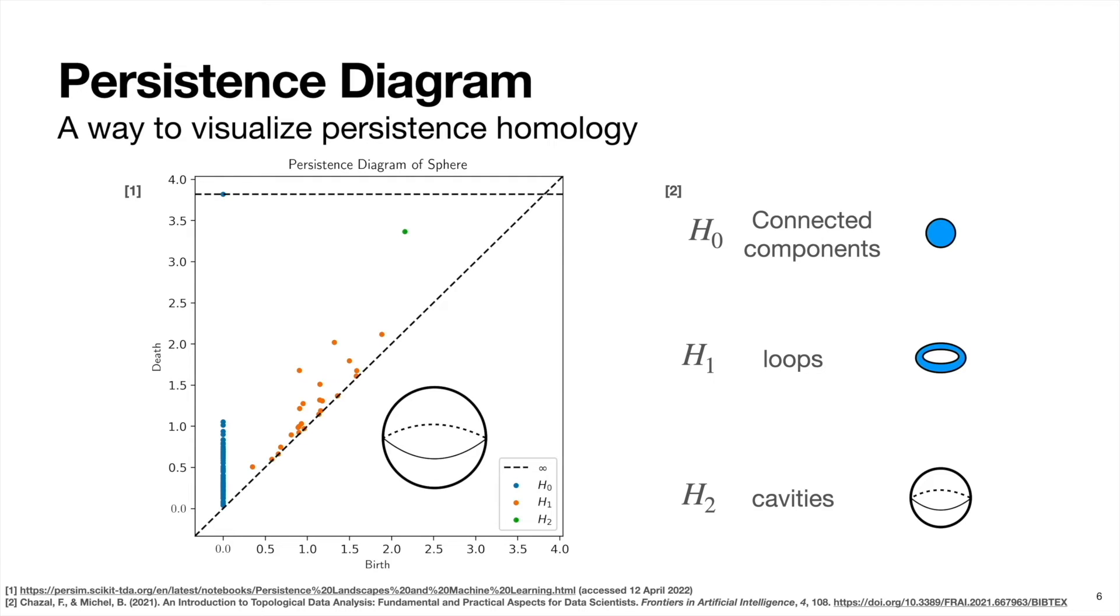So in this example, we have two points that are far from this line, the blue one in the top left here, and the green one right here. So we can ignore this blue one here because this corresponds to when every n-dimensional ball overlaps with every other ball.